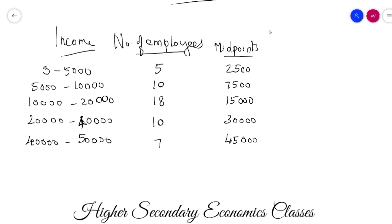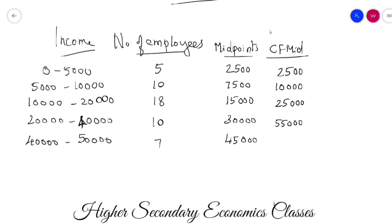The next step: we calculate cumulative frequency of midpoints. The cumulative values are: 2,500, then 10,000, then 25,000, then 55,000, then 1,000,000. Now the next step is the percentage of cumulative frequency of midpoints. The percentage is calculated as value divided by total, multiplied by 100.